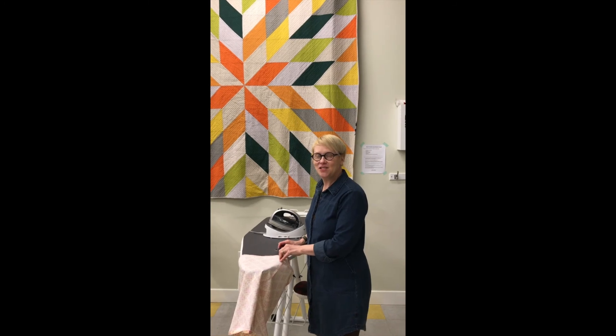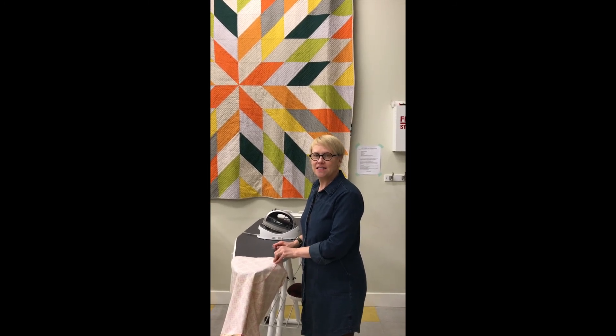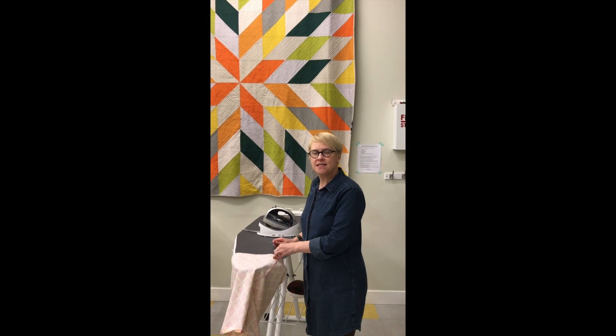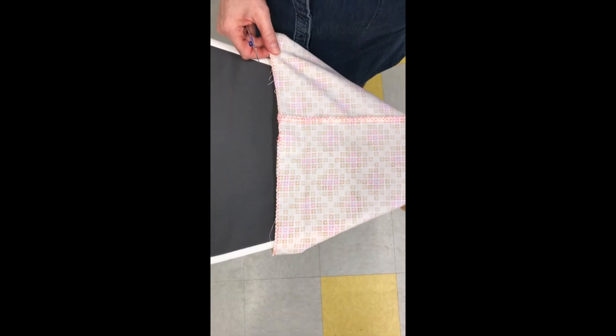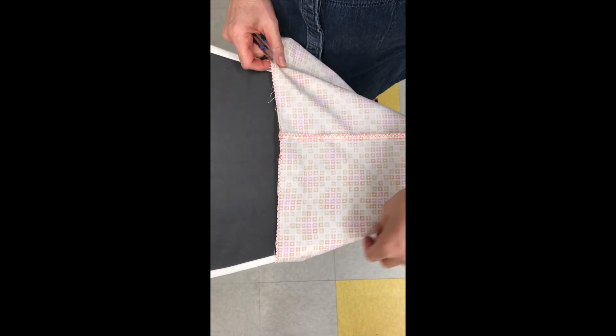The next step is to iron that zigzag edge over because you're creating a casing. A casing is like a little tunnel that you feed elastic through. Okay, so now we're going to turn this top edge over an inch and a half.